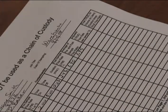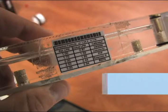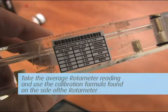All rotometers are calibrated against a primary standard quarterly. This calibration formula is located on the side of the rotometer. Take the average rotometer reading and plug it into the calibration formula where the X is to determine your actual flow rate.